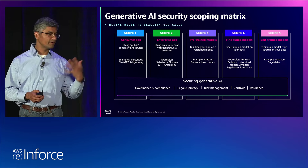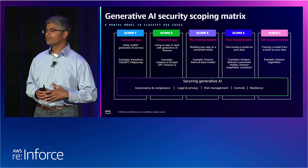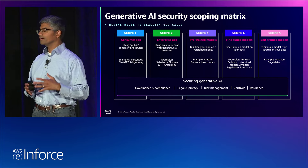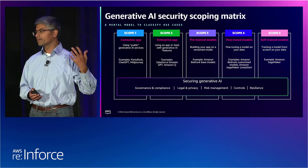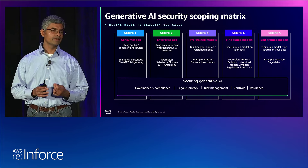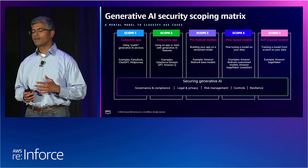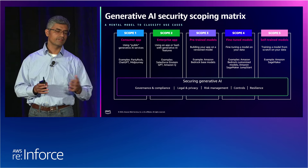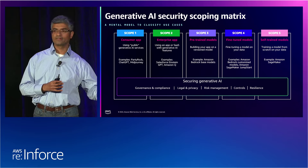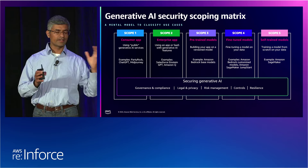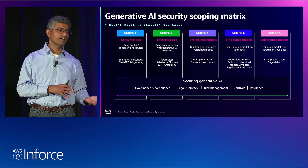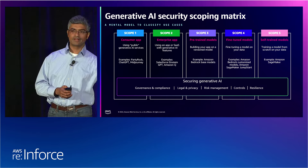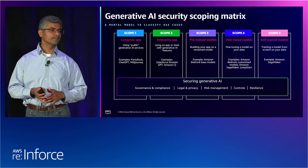Starting on the left, this is five scopes in number. Scope one is what we call consumer apps — a situation where you as a customer are consuming an application using consumer terms and conditions, meaning you don't have any specific agreement. It could be a free or paid service, but you're consuming it through consumer-level terms. An example would be using the consumer version of ChatGPT to experiment with, without any formal agreement between your company and the provider.